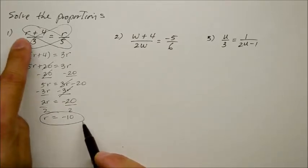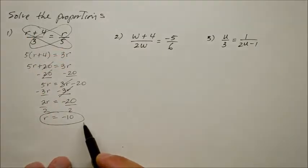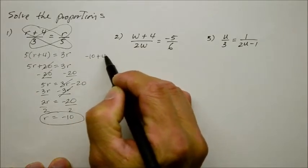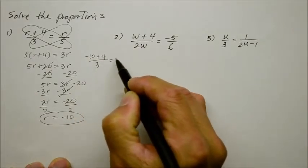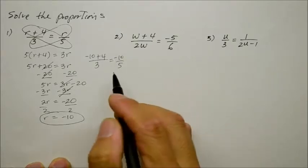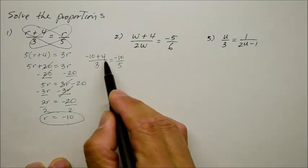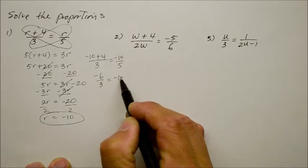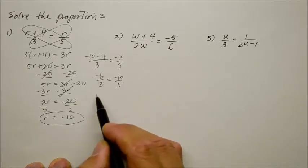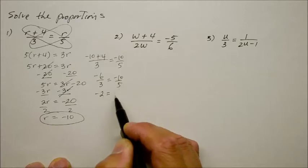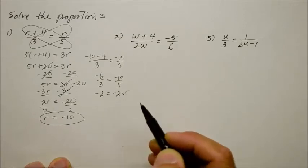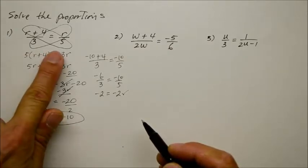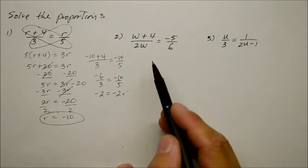Now how do I know if r should be negative 10? That will make the left side and the right side equal each other. Well here's how you check. Go back and plug it in. So we have negative 10 plus 4 over 3. Will that equal negative 10 over 5? Well on the left side, negative 10 plus 4 is negative 6 over 3. Negative 6 over 3 reduces to negative 2. Does that equal negative 10 over 5 which is also negative 2? Yeah! So it works out. So r does equal negative 10. And it will make the left and the right side of the equation exactly the same. Now why don't you try numbers 2 and 3?